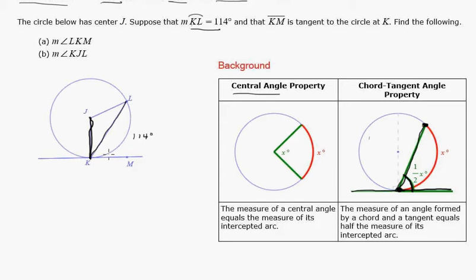So first, to find that angle, we can find this. We know that this part is 90 degrees. So if we know this, we can just subtract it from 90 and get this part.